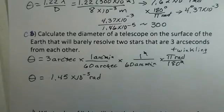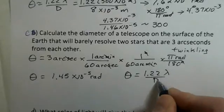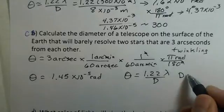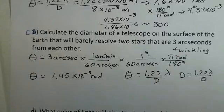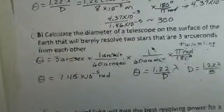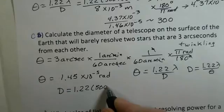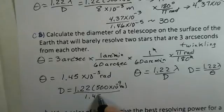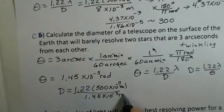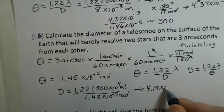1.45 times 10 to the minus 5 radians. Again, we're going to assume we're using this 500 nanometer light. Now we can use theta as 1.22 lambda over D. We're trying to find D. So cross multiply: 1.22 lambda over theta. We can calculate the diameter of this telescope. We have the numbers necessary. Let's go ahead and do the calculation. 1.22, the lambda is 500 times 10 to the minus 9 meters. Our angle 1.45 times 10 to the minus 5 radians.